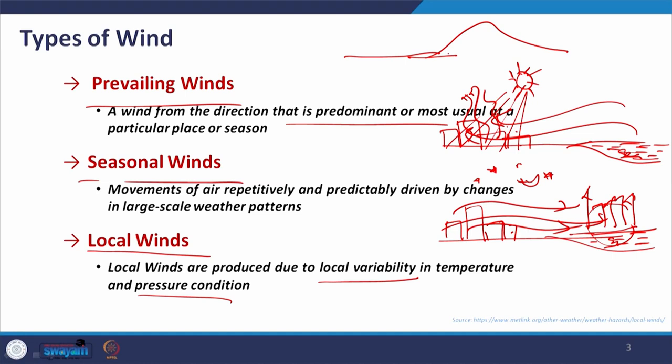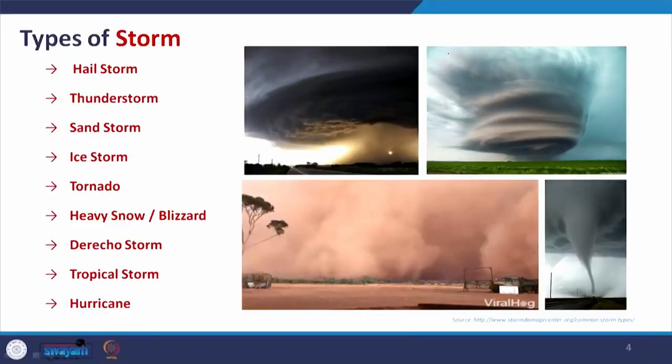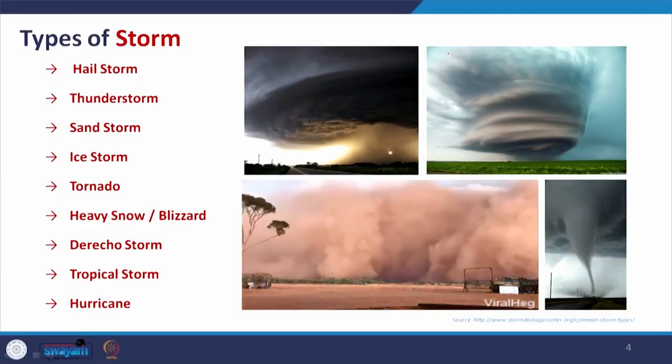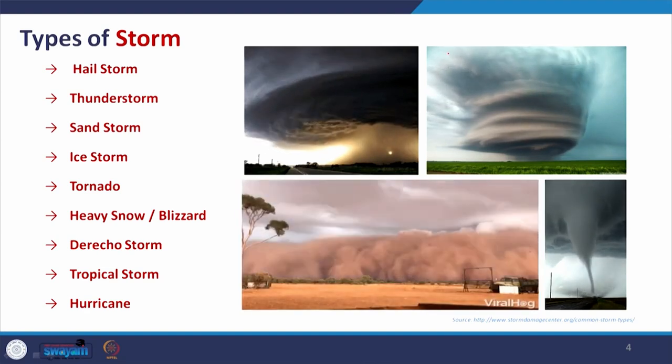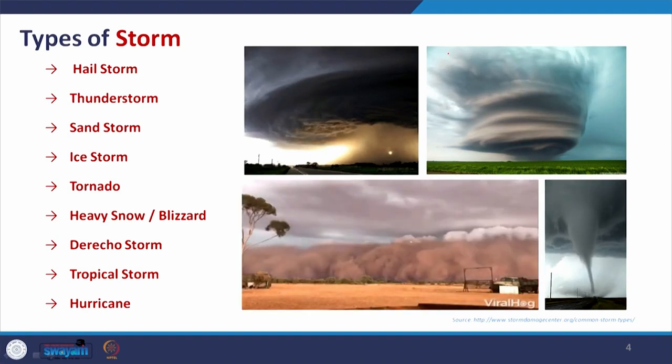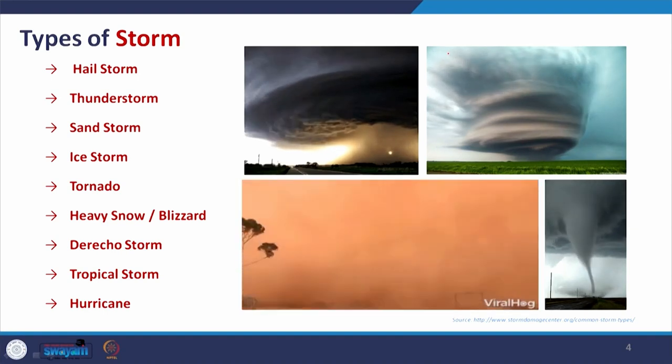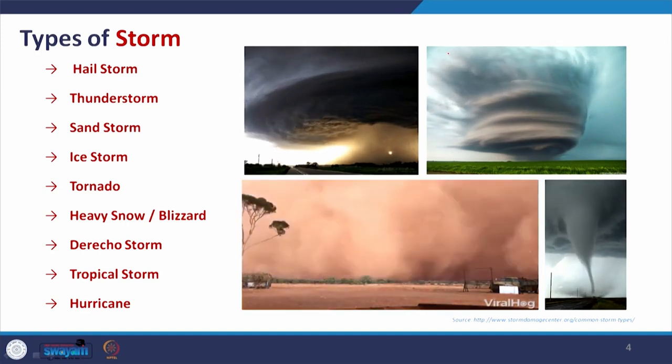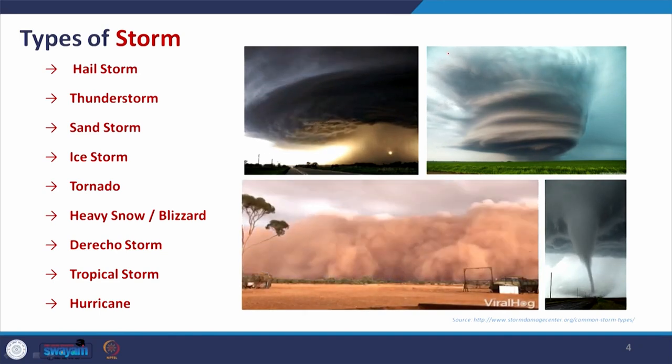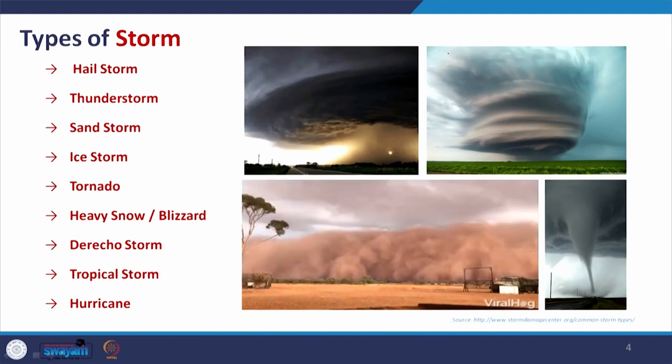Whenever there is a change in temperature, there is also a relation with pressure. When temperature increases, a low pressure area is created, and movement occurs from high pressure to low pressure. The scale of storm ranges from very mild low-speed wind that we enjoy, to very low pressure at magnificent scale producing hurricanes, tornadoes, and sandstorms that are very vulnerable and threatening.